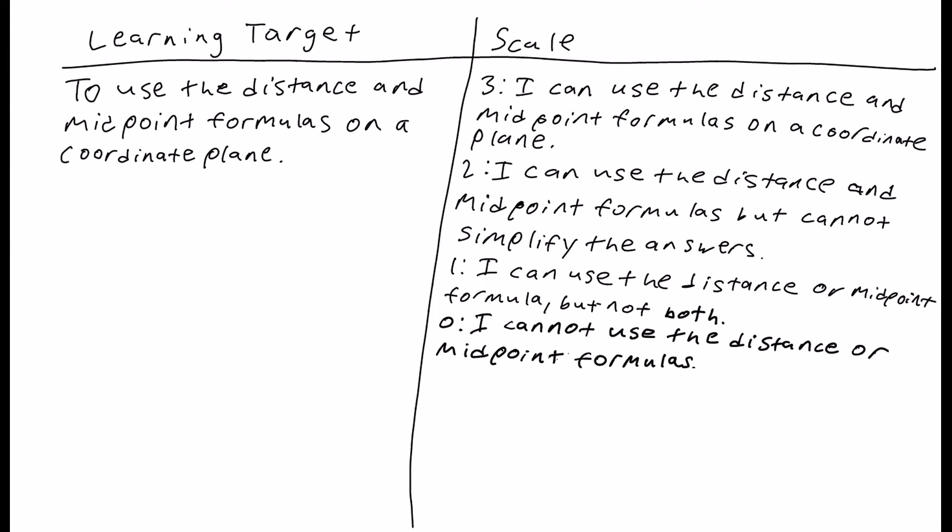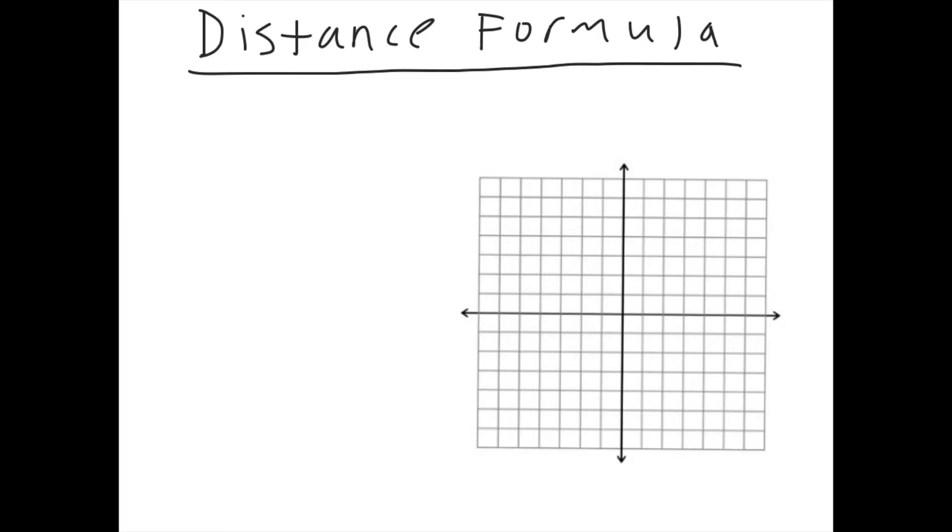Let's get started. First we're going to talk about the distance formula. So the distance formula is that d, distance, between two points is the square root of x2 minus x1 squared plus y2 minus y1 squared.